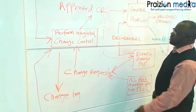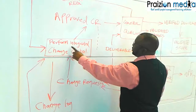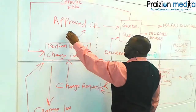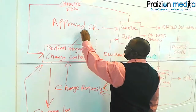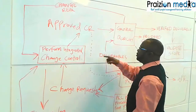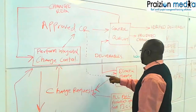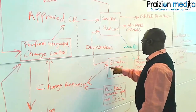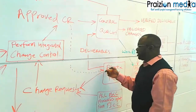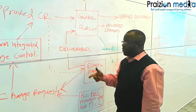As those change requests go into Perform Integrated Change Control, we could have them as an output — approved change requests. And those approved change requests could go back into Direct and Manage Project Work for implementation on the second go-around.